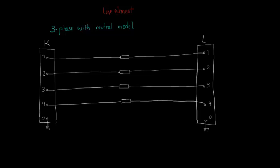The self-impedances of each conductor will be called ZAA, ZBB, ZCC, and ZNN. The mutual impedances will be named according to the conductors they relate to. For example, between conductor A and B we have ZAB, and between C and N we have ZCN, and so on.